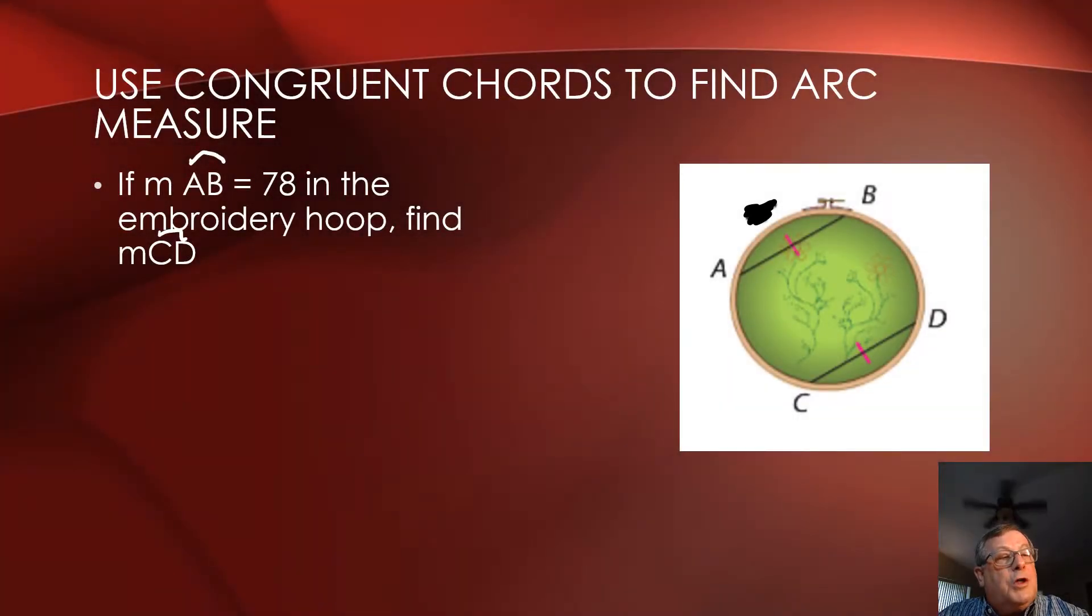We're now working with arcs and chords, and we know that a chord is a segment that has endpoints on the circle. Since the chord has endpoints on the circle, it also creates or defines an arc on the circle, and we're starting off here about congruent chords.